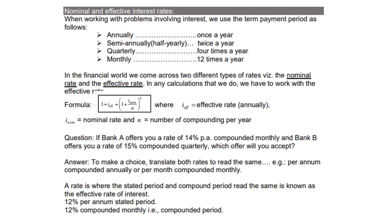Nominal and effective interest rates. When working with problems involving interest, we use the term payment period as follows: annually means once a year; semi-annually or half-yearly means twice a year; quarterly means four times a year; and monthly means 12 times a year. In the financial world, we come across two different types of rates — namely, the nominal rate and the effective rate.